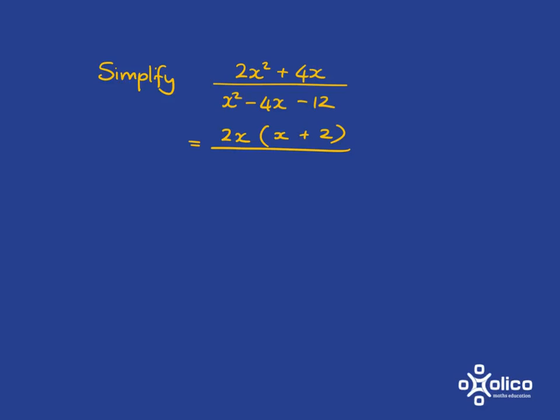It could be 1 together with negative 12, or negative 1 with 12, or 2 with negative 6, or negative 2 with 6, or 3 with negative 4, or negative 3 with 4. Which of these add up to negative 4? Well, it's 2 plus minus 6 that gets me to negative 4.